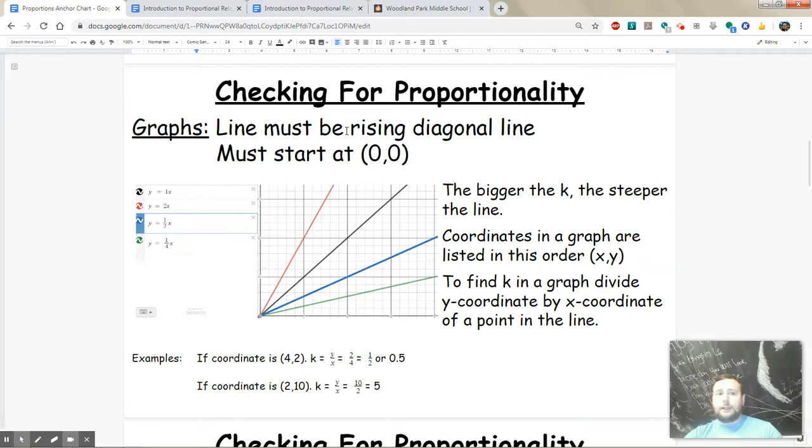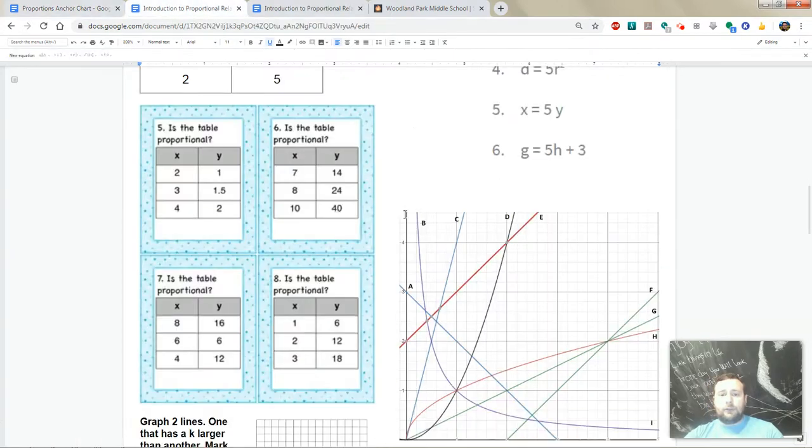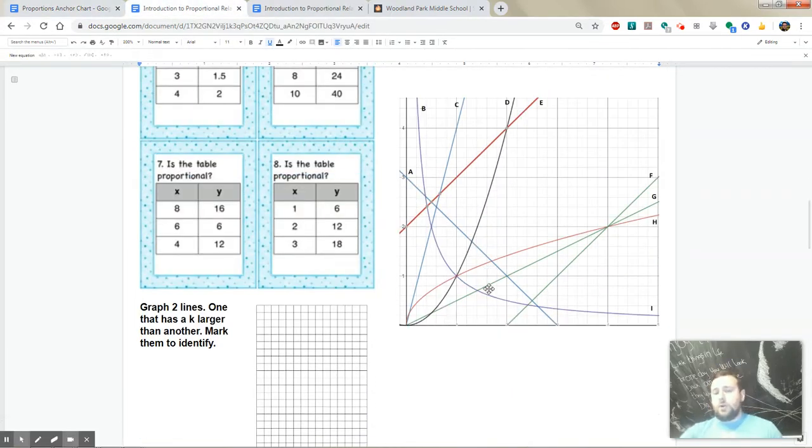All of these are proportional because they start from (0, 0) and go diagonally up. In the practice, there are some lines here, and most are wrong because they curve, or like line E, which doesn't start at (0, 0) even though it's straight. Same problem with line F—it's a straight diagonal line but doesn't start at (0, 0).